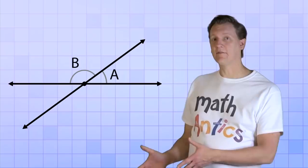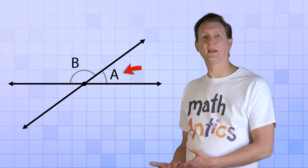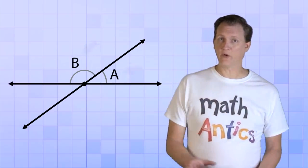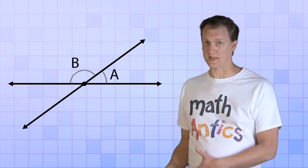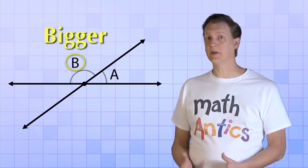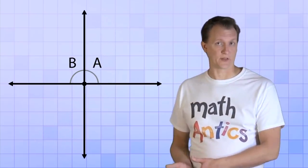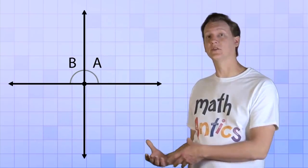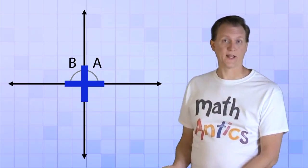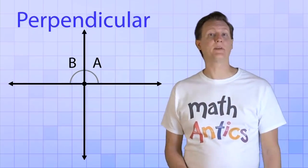Alright then, so now we have a diagram that shows angle A and angle B, and you might notice that those angles aren't the same size. B seems to be bigger than A. But what if we rotate one of our lines until the angles do look like they're the same size? Now our angles look kind of like a plus sign. Lines arranged like this are called perpendicular.